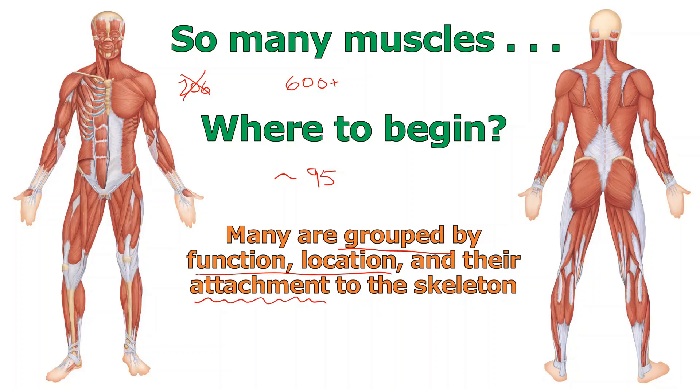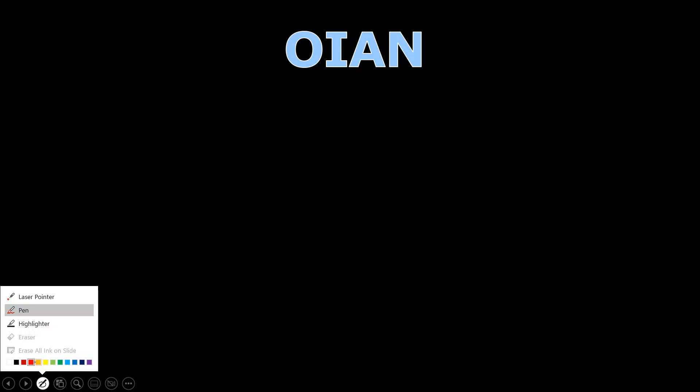When you learn one muscle in a group, the others will usually be closely associated with it — though sometimes they're not and you have to do some memorization. The first framework we'll get into is O-I-A-N. It's not a word; it stands for four different terms that are often discussed when you're learning muscles. It certainly helps if you know your bones, so my first recommendation is that if you haven't studied the bones lectures yet, you might want to do that, because learning the muscles assumes you know the bone names.